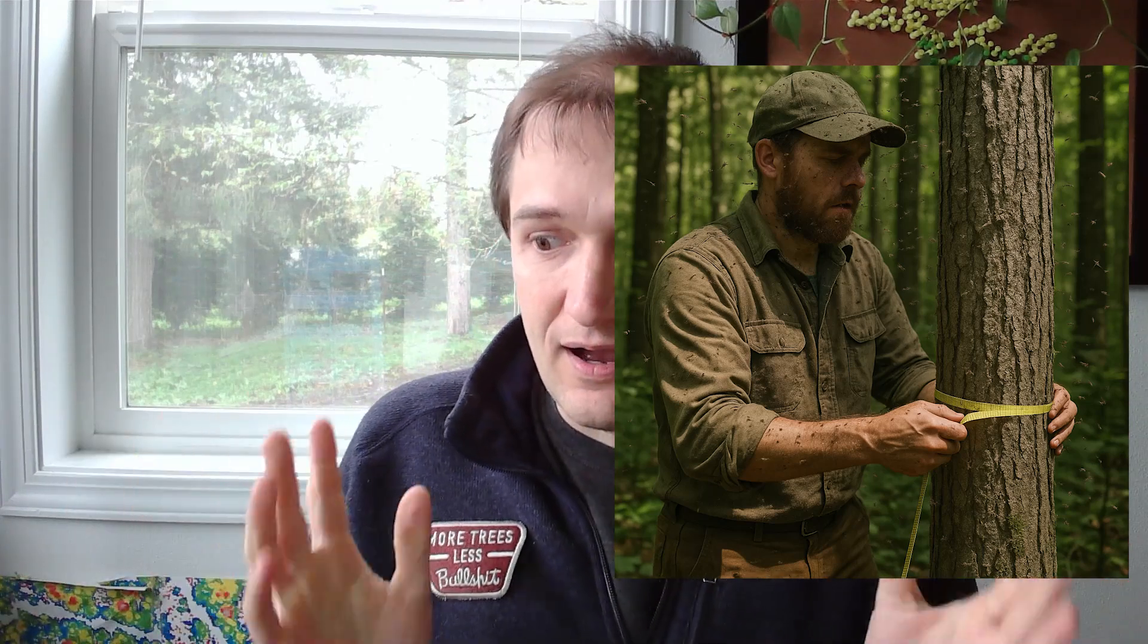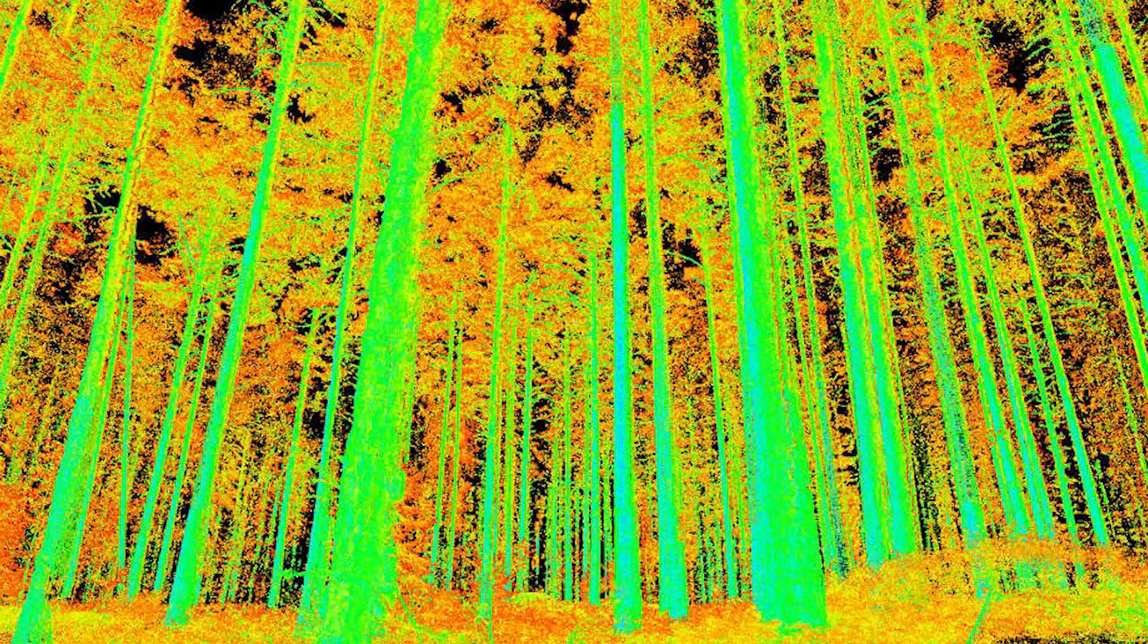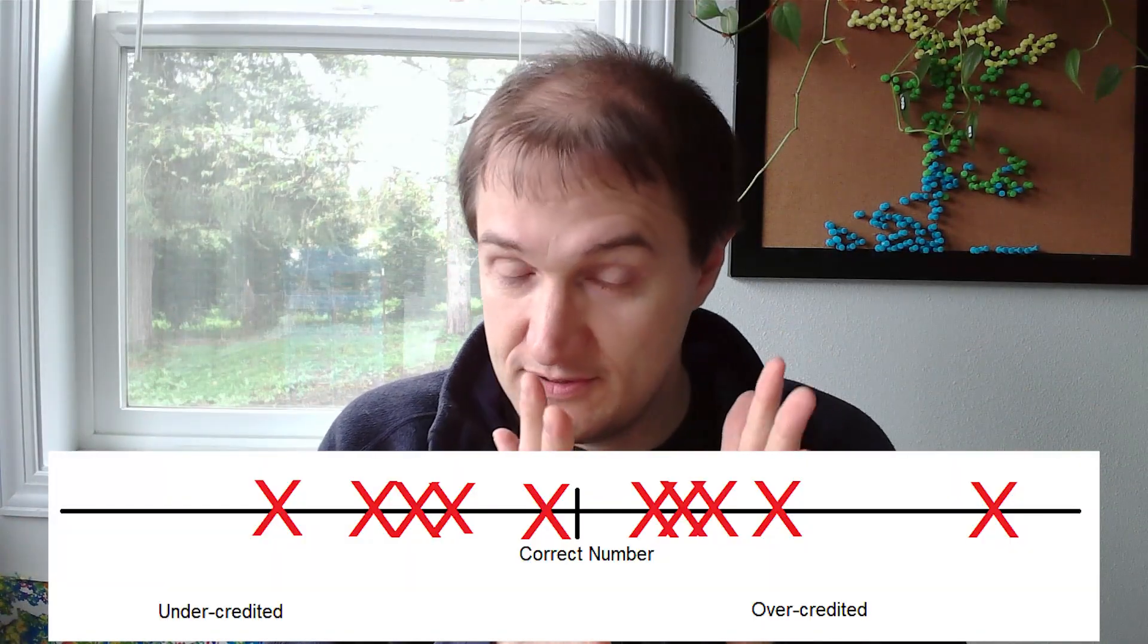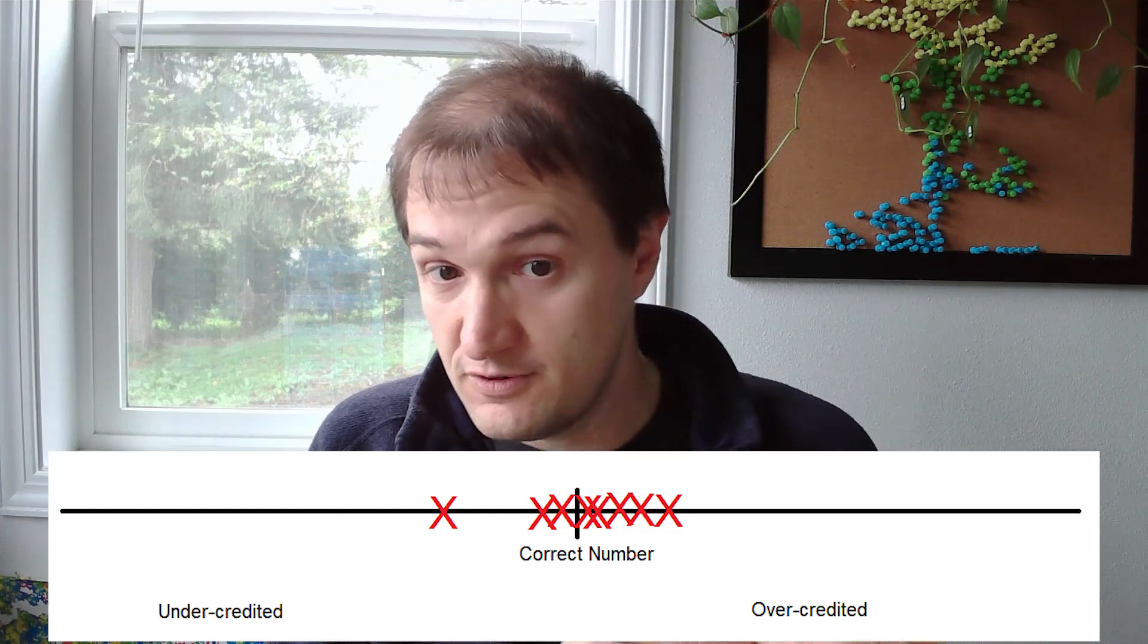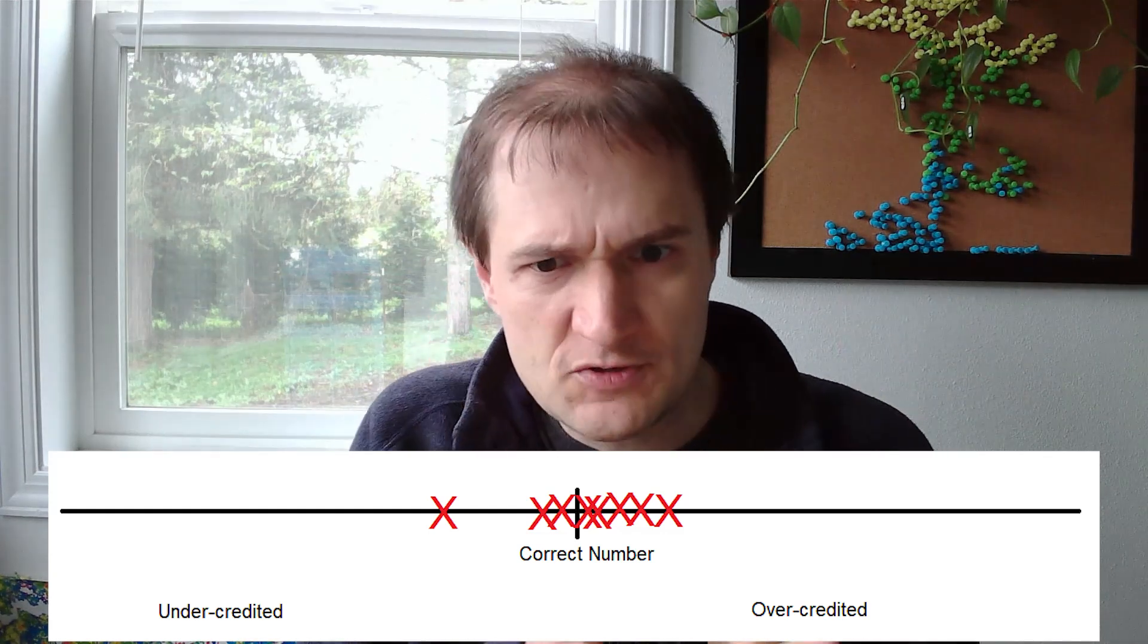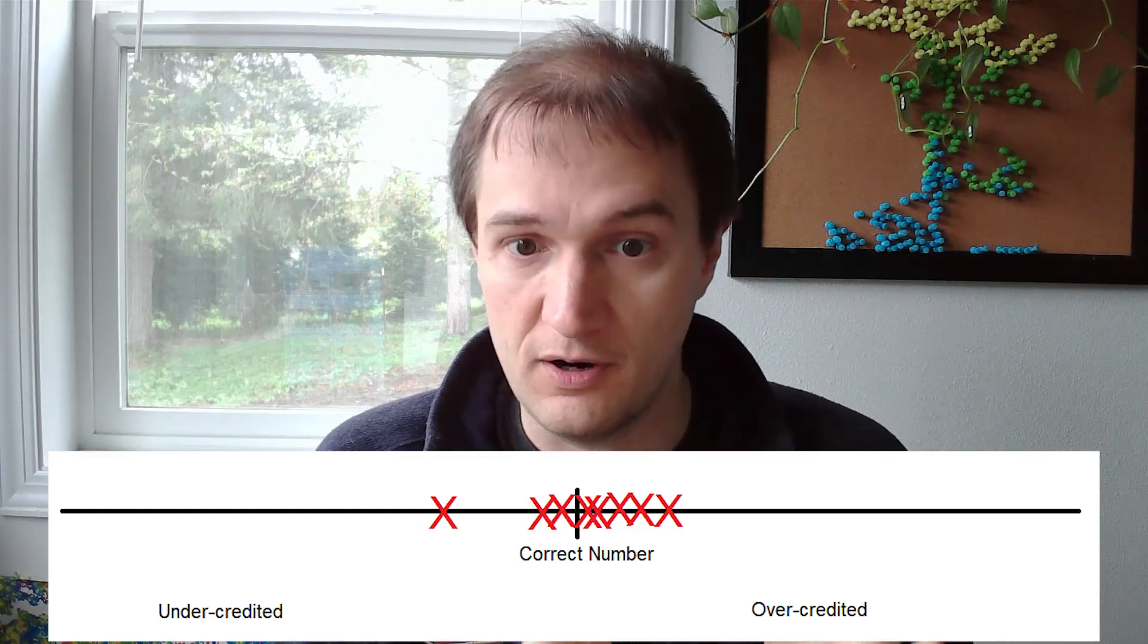In those methodologies, you're still going to have error. You're never going to be perfect unless you've mapped and measured every tree with 3D, whatever. But you're going to be more clustered around the center, around where you should be. So you're still going to have projects that overestimate and underestimate, but for the most part, all the projects are going to be pretty close to the actual number.